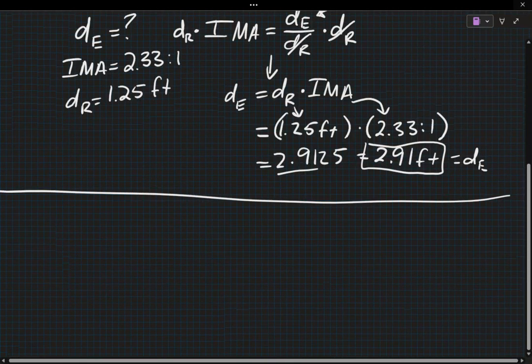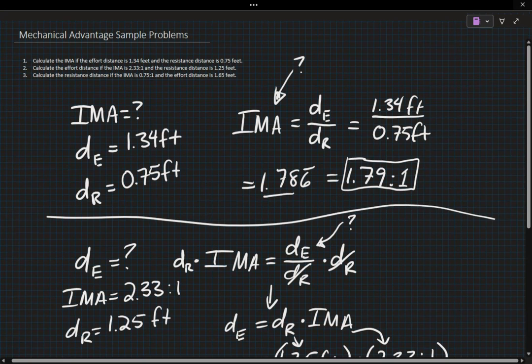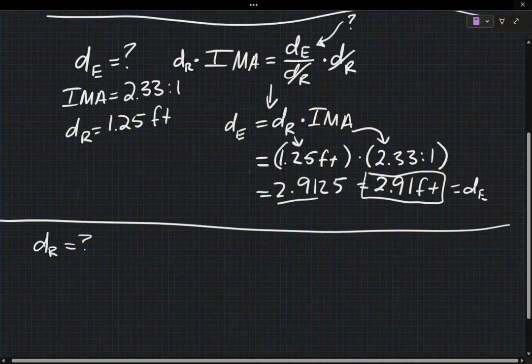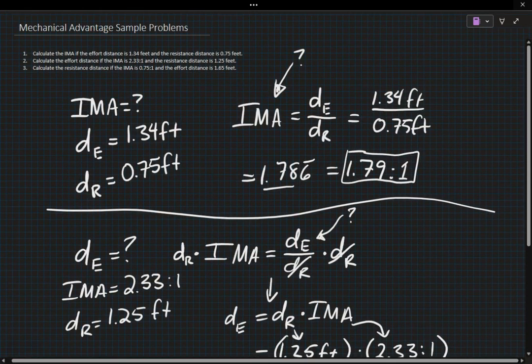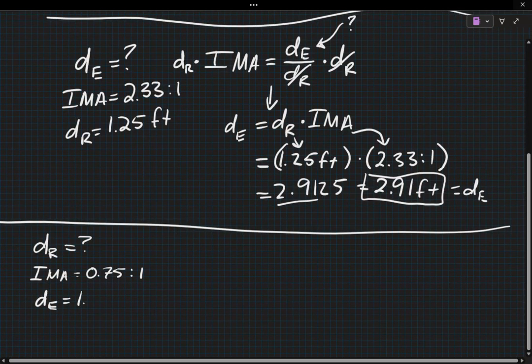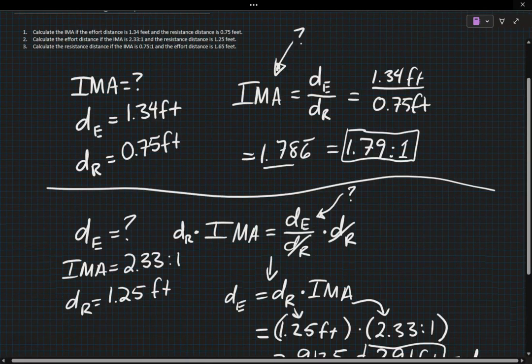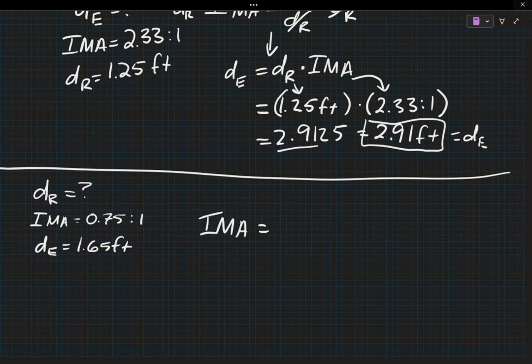So let's go ahead and make our list. We're looking for DR, DR equals question mark. Our IMA is 0.75 to 1 and our effort distance is 1.65 feet. So DE equals 1.65 feet.